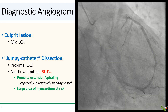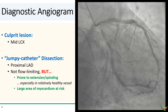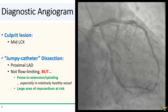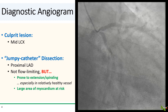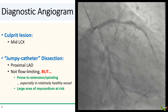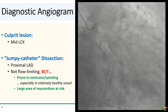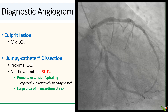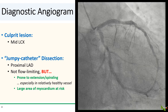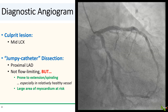Even though the LAD dissection is not flow-limiting, it is an antegrade dissection, meaning that the dissection opens in the direction of forward blood flow. These dissections are prone to extension and spiraling, especially in a relatively undiseased vessel with no plaque or calcium to stop the propagation. Moreover, we are in the proximal LAD with a huge area of myocardium at risk. So we felt it was important to stent the LAD and cover the dissection in addition to fixing the circumflex.